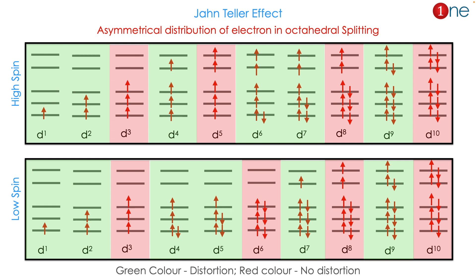The Jahn-Teller effect happens in the octahedral system mostly due to the asymmetrical distribution of electrons. If the electrons are symmetrically oriented, there's no effect. If asymmetrically oriented, the effect occurs. This principle is applicable for high spin as well as low spin.